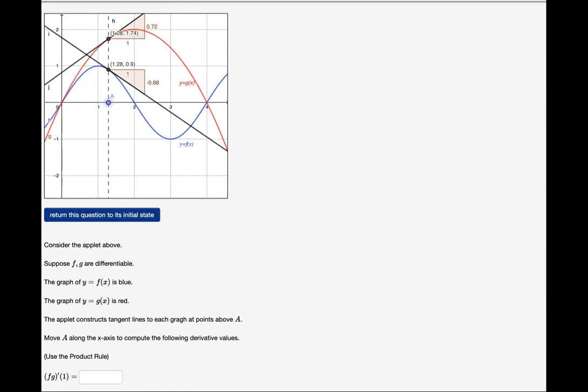Okay, so now we are going to compute f times g derivative at the input value x equals 1. Remember, the derivative of the multiplication of two functions evaluated at some input value can be gotten by taking the derivative of the first function evaluated at 1 times the second function evaluated at 1, plus the derivative of the second function evaluated at 1 times the first function evaluated at 1. This is just the product rule.